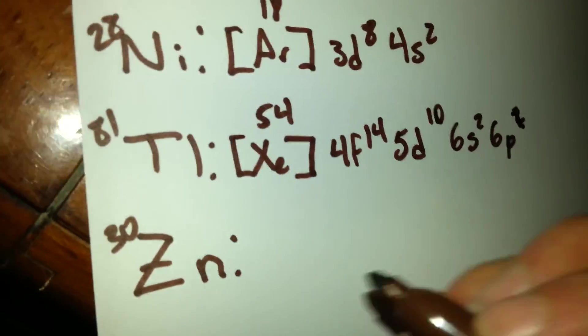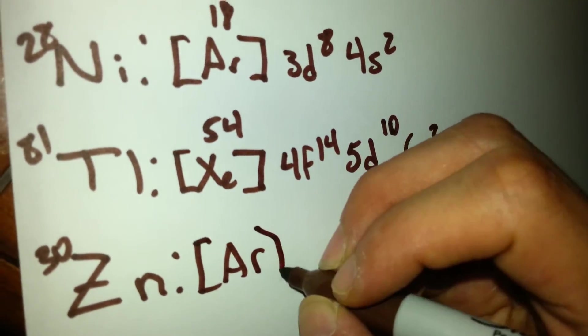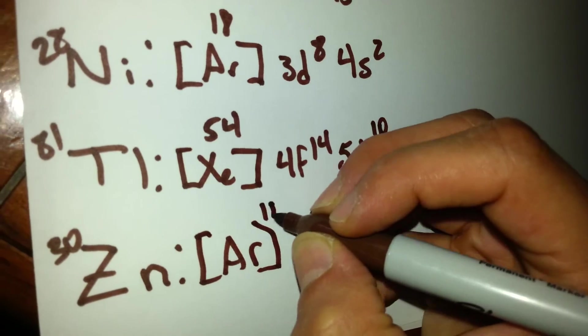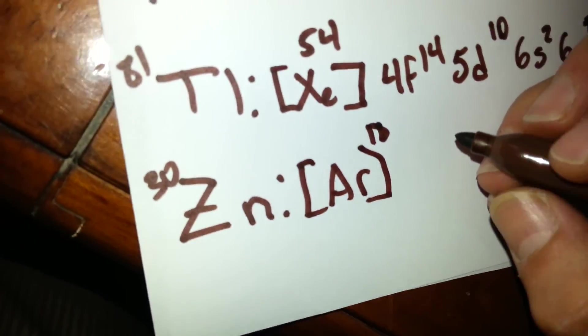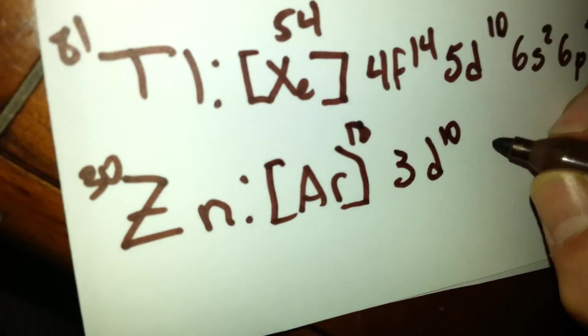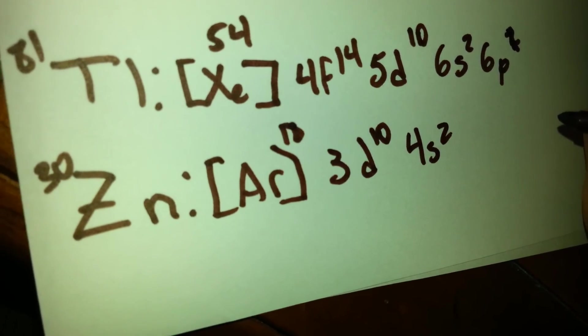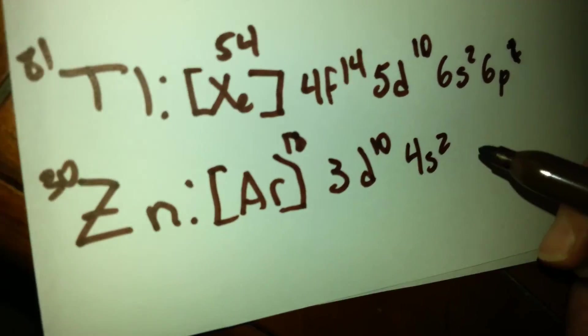For zinc, we are going to utilize argon again, for a total of 18. After that, we have the 3d orbital full with 10, and the 4s orbital with 2, giving us 18, 28, 30.